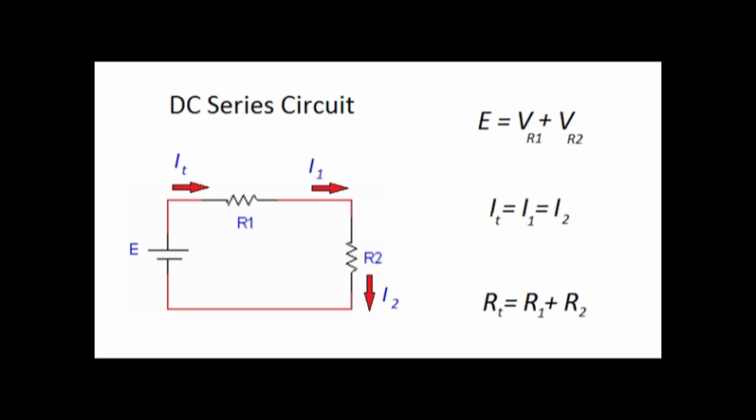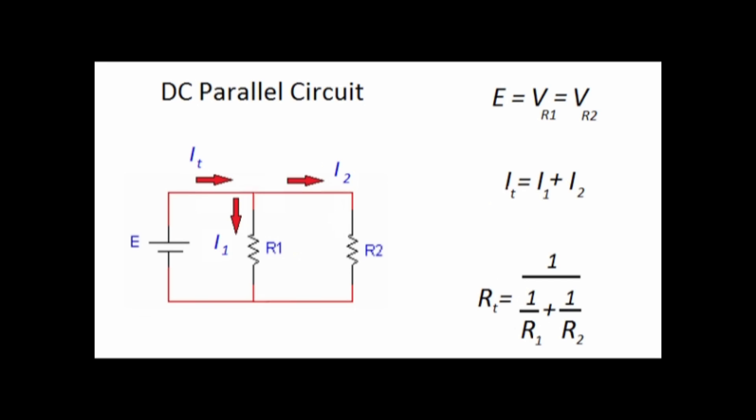Two or more elements are in series if they are cascaded or connected sequentially and carry the same current. Two or more elements are in parallel if they are connected to the same two nodes and consequently have the same voltage across them.